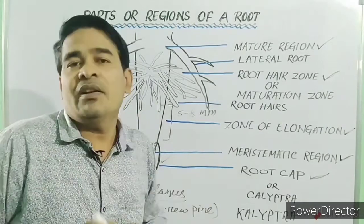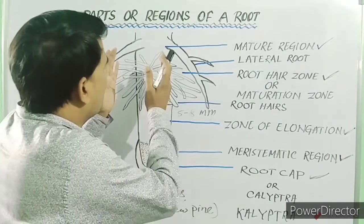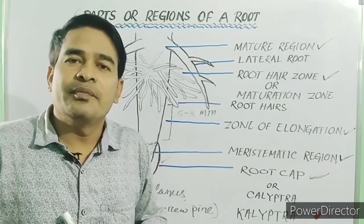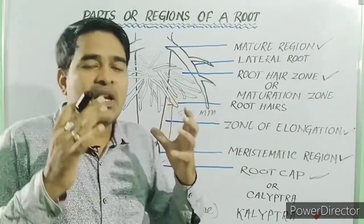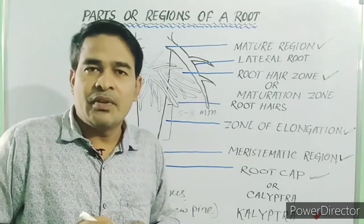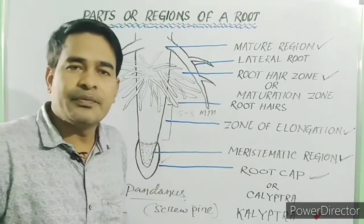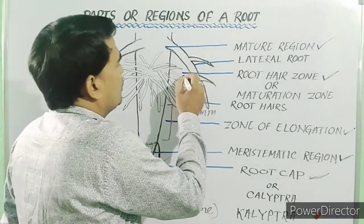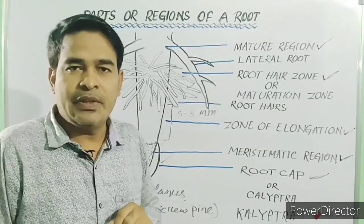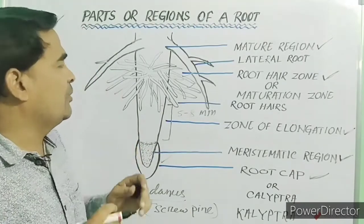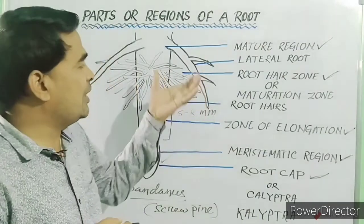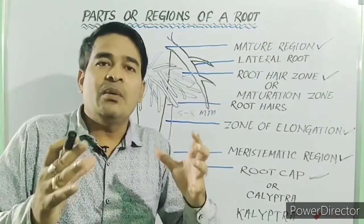Xylem and phloem are produced. Then, superficial cells or surface cells become the epiblema. And many cells of the epiblema develop tubular outgrowths, which are called root hairs. And this zone is very important for absorption of water. As the root hairs increase the surface area for absorption.